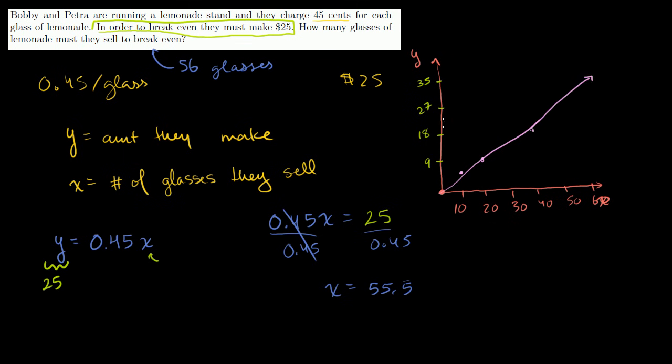And then if you want to see their break-even, their break-even has to be $25, which is right about here. $25. Their break-even is $25 right around there. Let me draw the line a little bit better than that. So the line is going to look like this. And if the break-even is $25, right there, you see that they have to sell about 56 glasses. And obviously the way I drew this isn't a super neatly drawn graph, but hopefully it gives you the general idea.